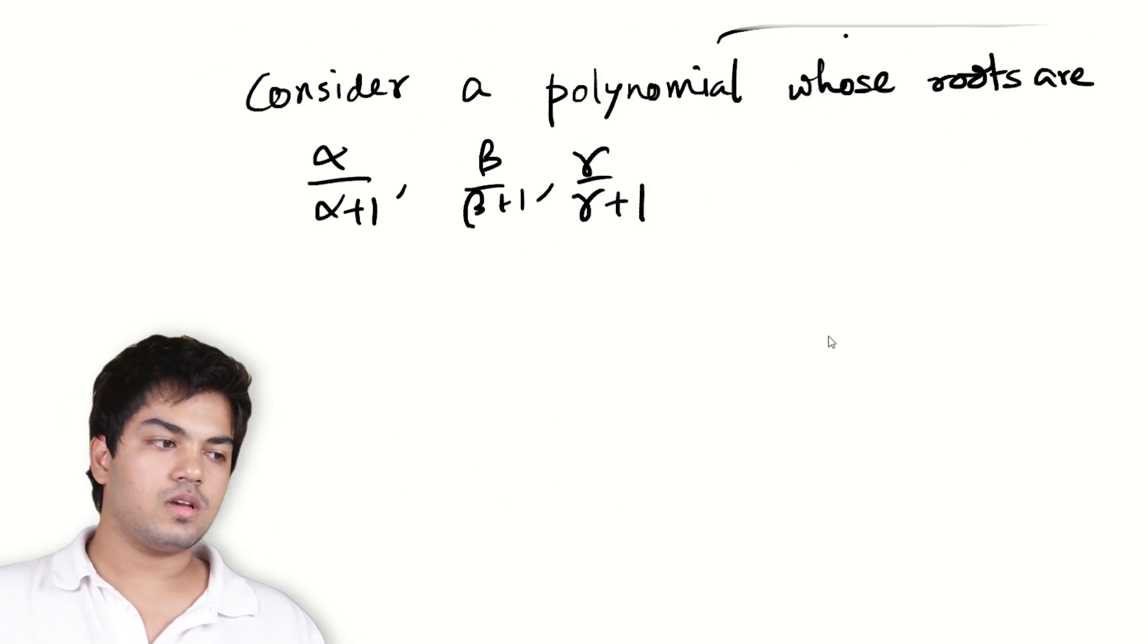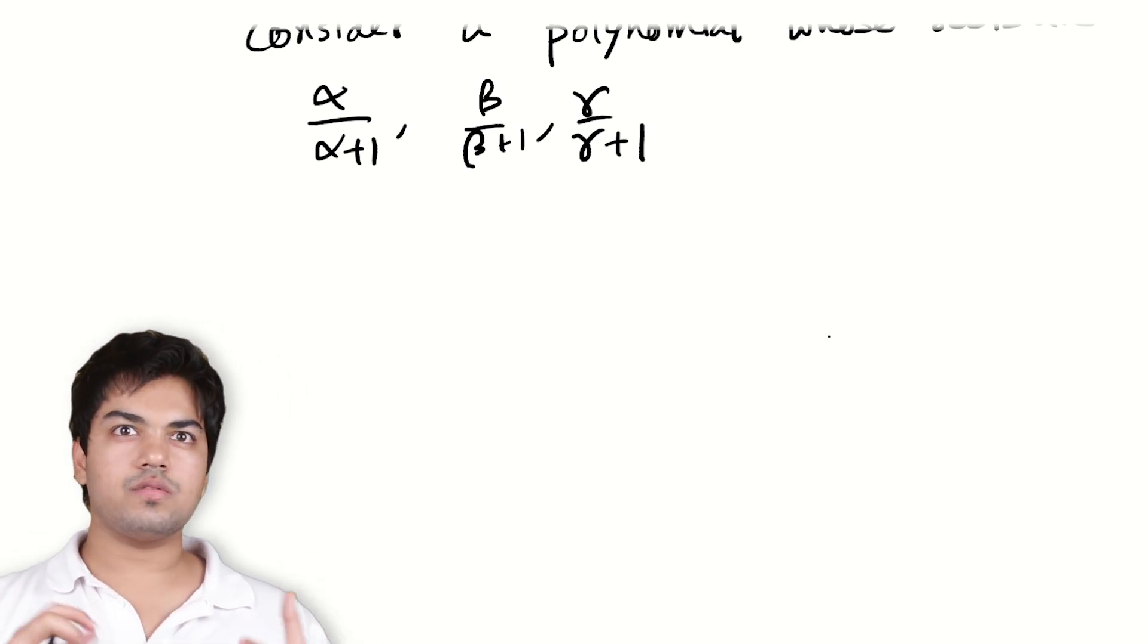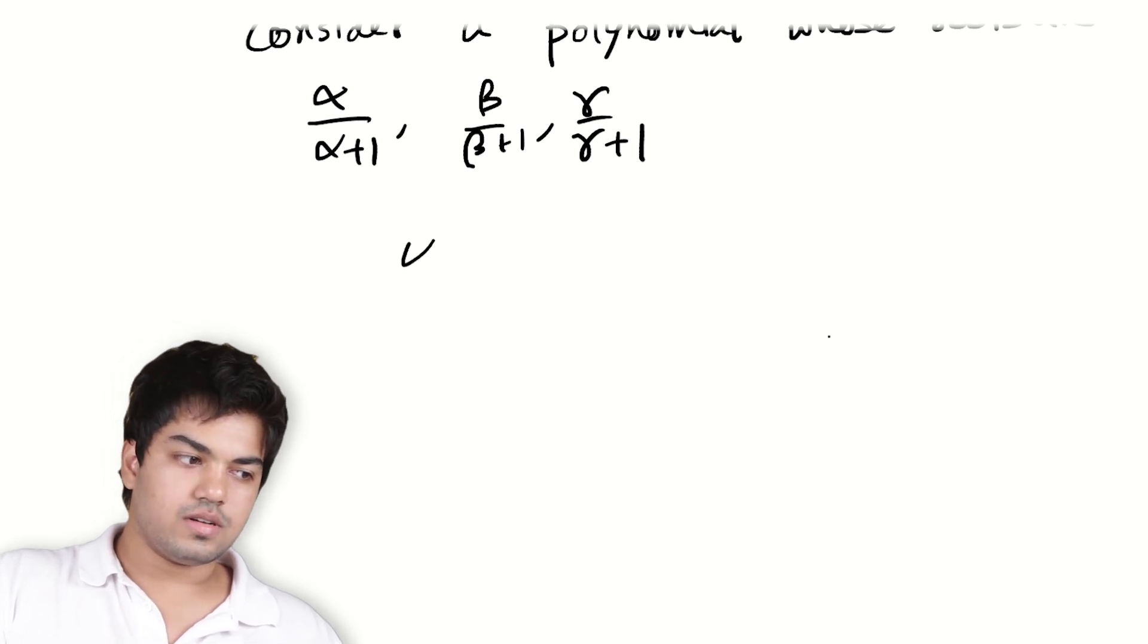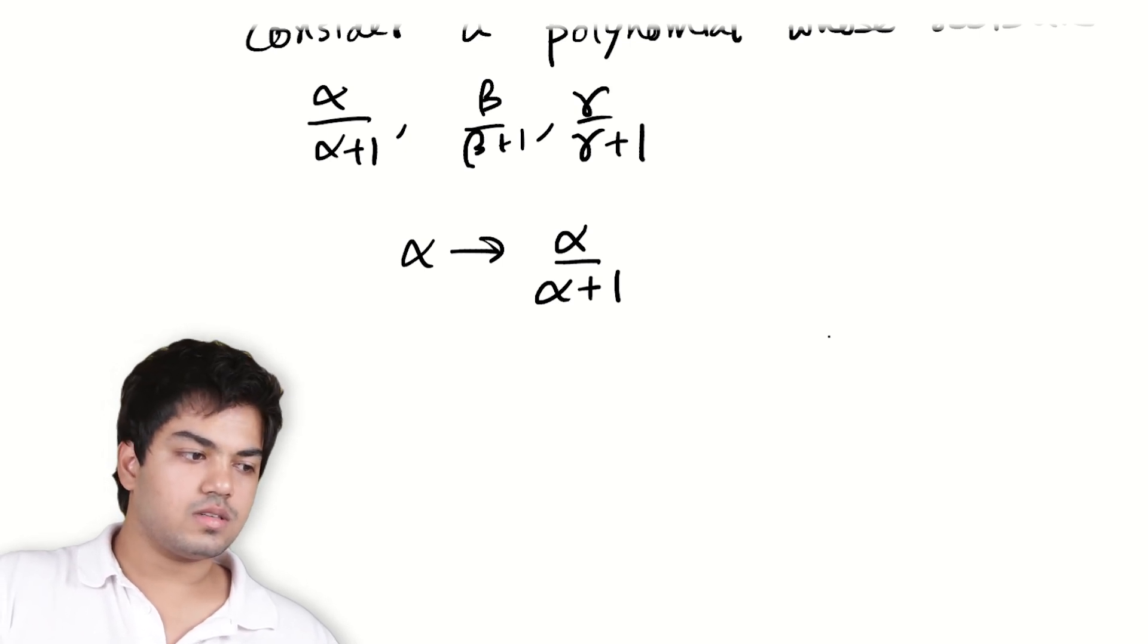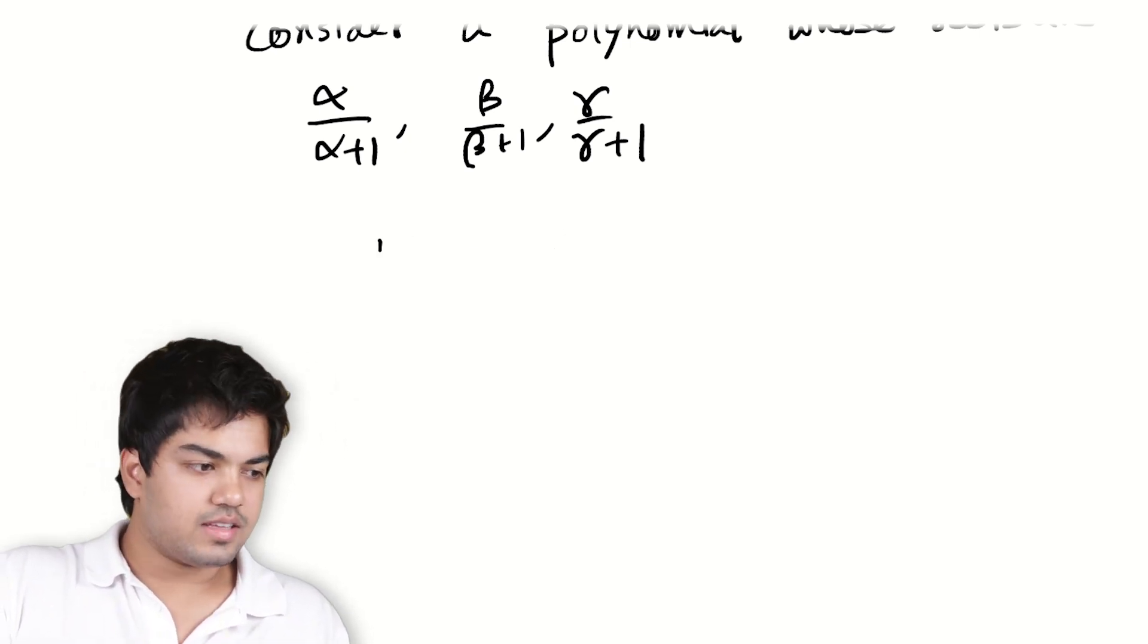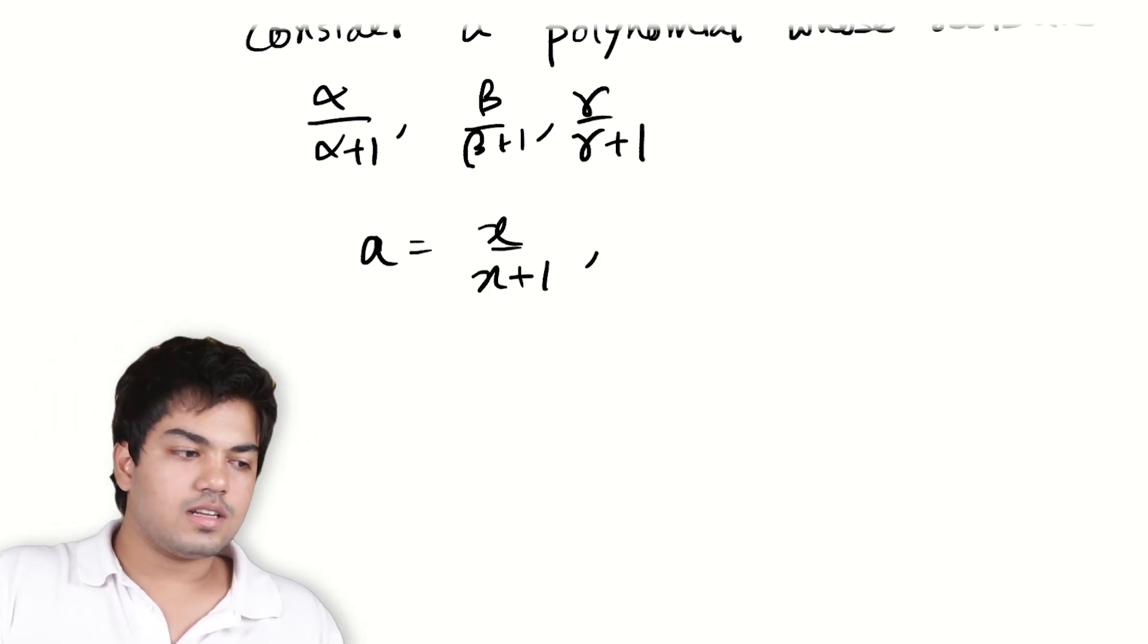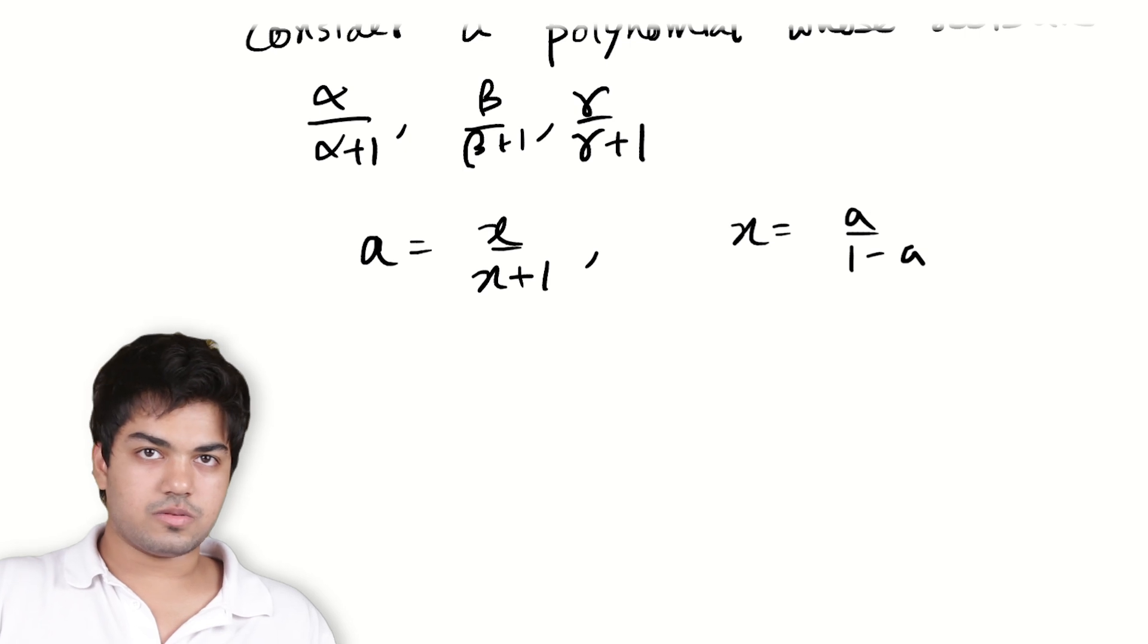So how do I do something like this? The thing to notice is what is the converse operation? This is like a transformation, right? Sending α to α/(α+1). How do I reverse this? The answer is using this. It's like if the point is that if a = x/(x+1), what is x in terms of a? And you'd see that it's actually x = a/(1-a). That's the inverse process, right?